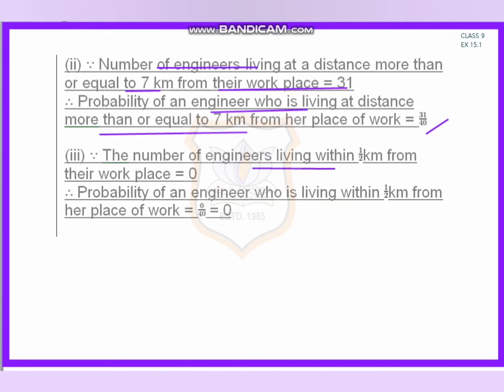The number of engineers living within half a kilometer from their workplace is zero. So the probability of an engineer living within half a kilometer equals 0 by 40, which equals zero.